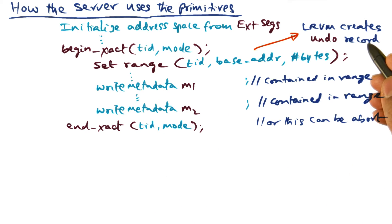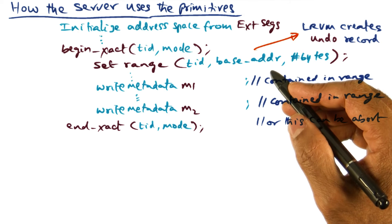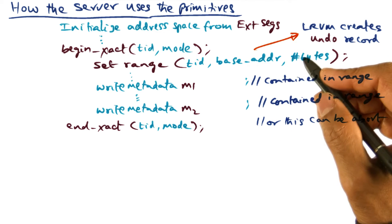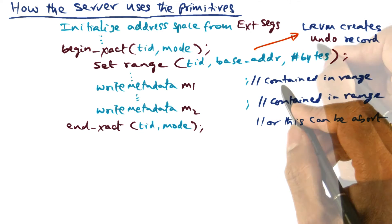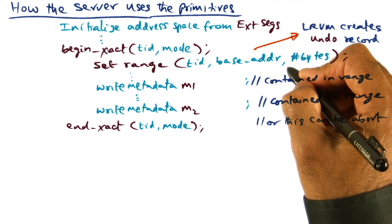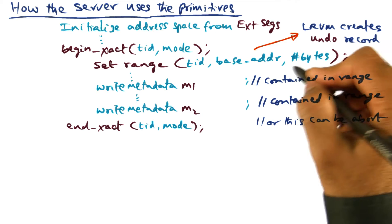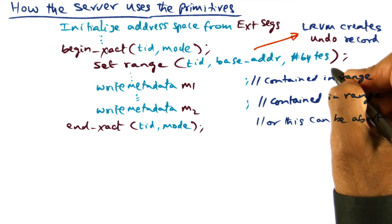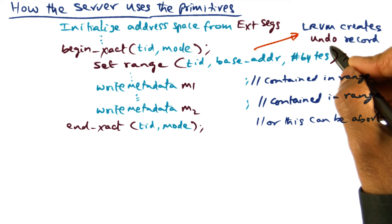So LRVM makes an undo record, which is the original version of that portion of the address space. So this undo record is an in-memory copy of the virtual address space starting here for some number of bytes specified by this number of bytes. And this is a temporary record.